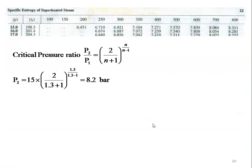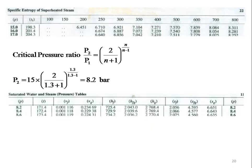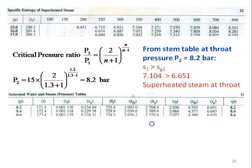For the throat section, we calculate the critical pressure ratio: P2/P1 = (2/(N+1))^(N/(N-1)). For superheated steam, N = 1.3. So P2 = 15 × (2/2.3)^(1.3/0.3) = 8.2 bar. From the steam table at 8.2 bar: SG2 = 6.65, TS2 = 171.4°C, VG2 = 0.23469 m³/kg, HG2 = 2768.4 kJ/kg, SG = 6.651 kJ/kg·K. Since S1 = 7.104 > SG2 = 6.65, the steam at the throat is superheated.